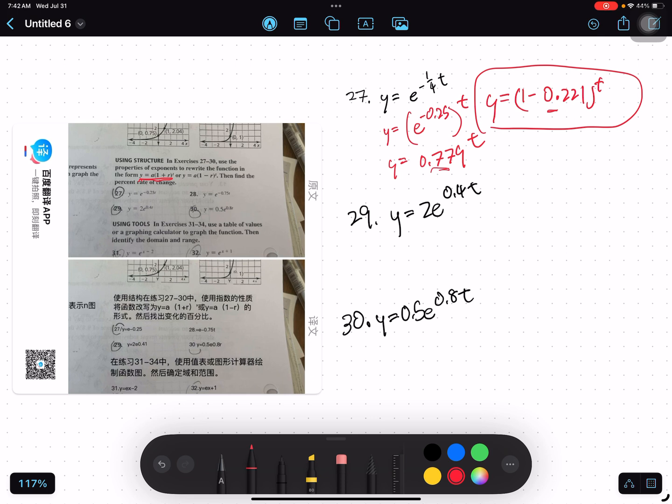Number 29. This is basically the same, but we can separate out the 2. 2 is going to be a here.